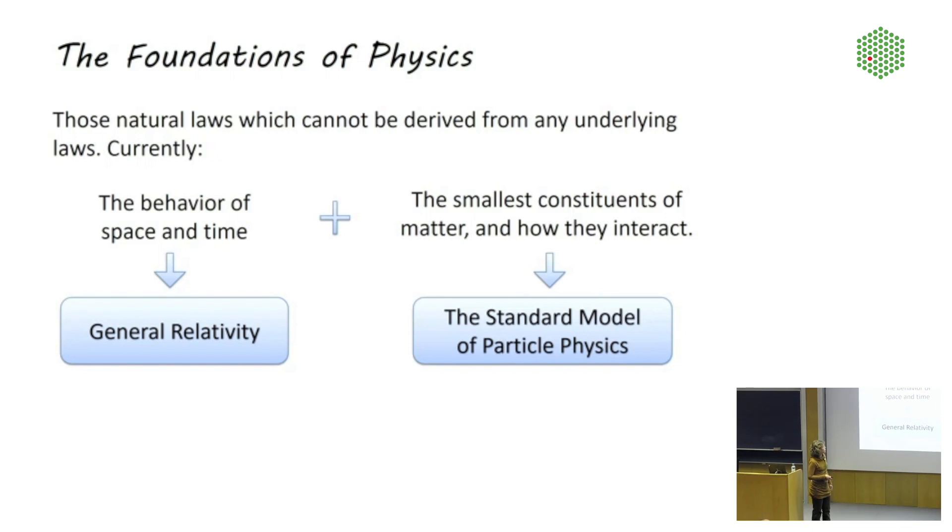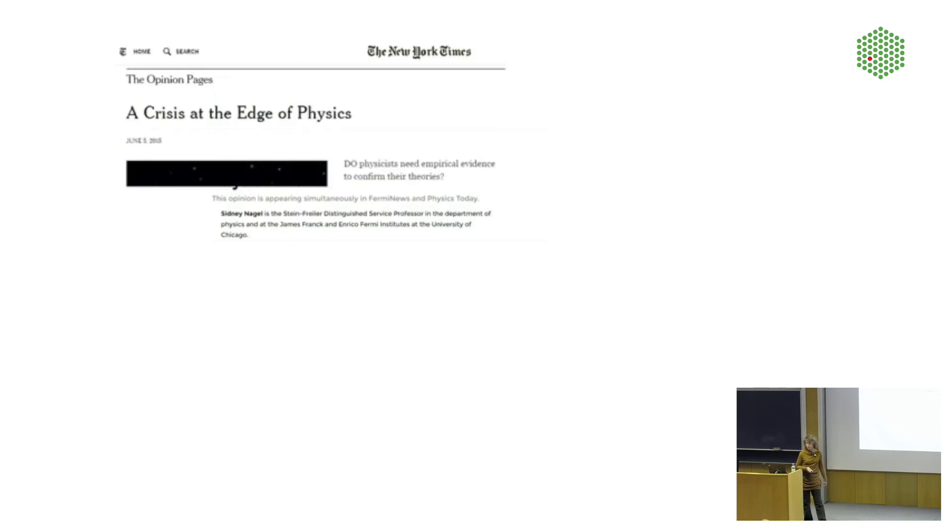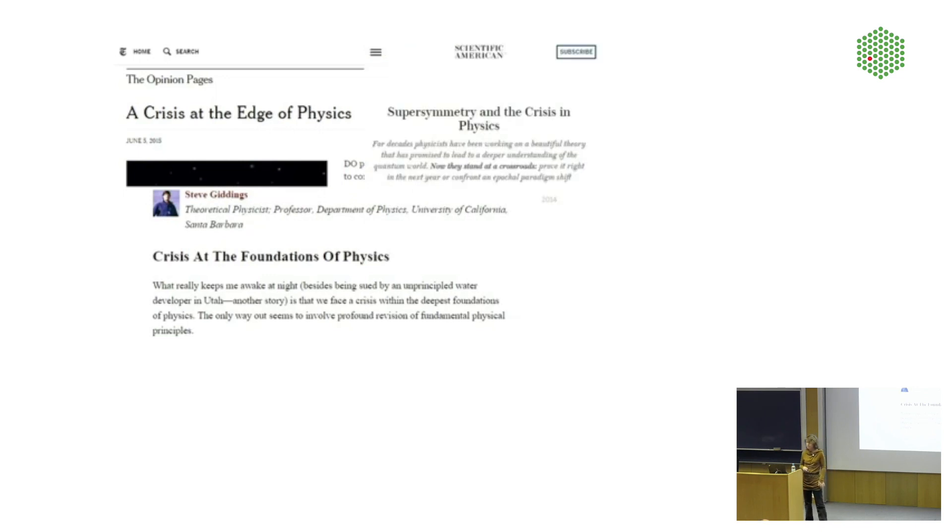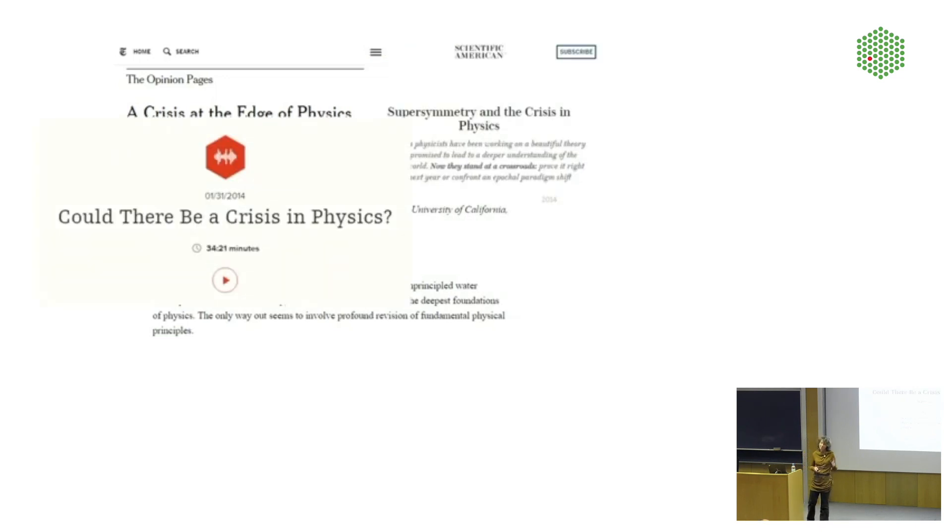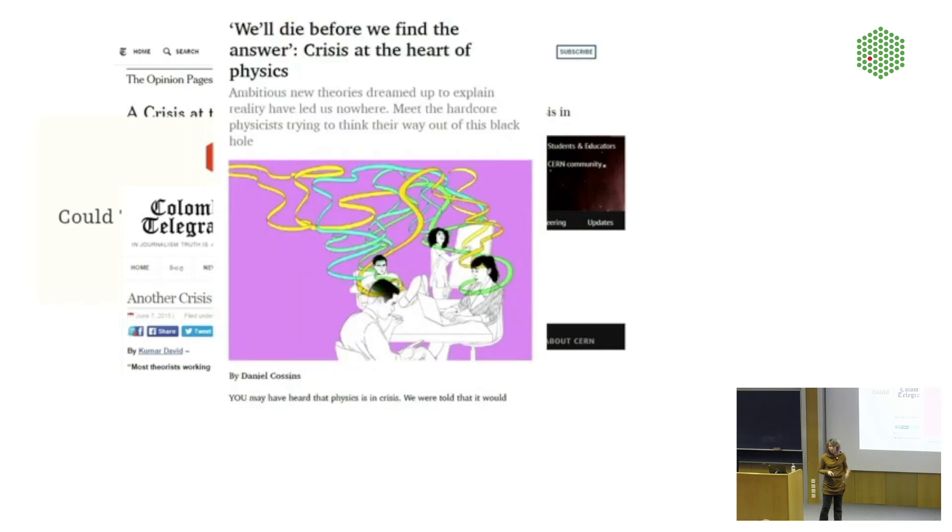What has been happening in that field as of recently? Not a terrible lot. There has been a lot of talk about a crisis in physics. A crisis at the edge of physics, at the foundations of physics, had something to do with supersymmetry. Could there be a crisis in physics? Another crisis in physics? Is theoretical physics in crisis? Yeah, you could get the impression. This is my favorite. This is a new one that appeared in New Scientist two months ago, something we will die before we find the answer. That's a quote from Neil Turok, who is currently director of Perimeter Institute. That is one of the most prestigious research institutes in the foundations of physics.